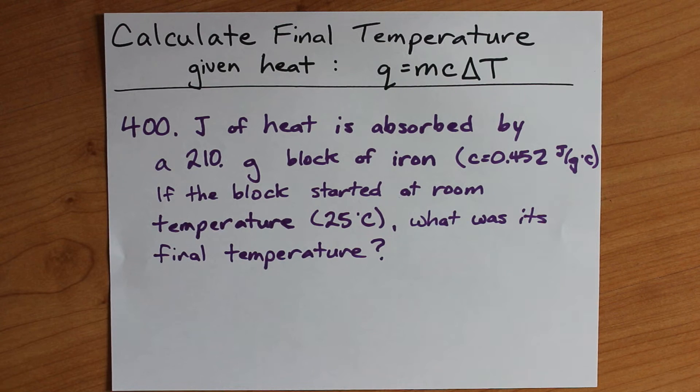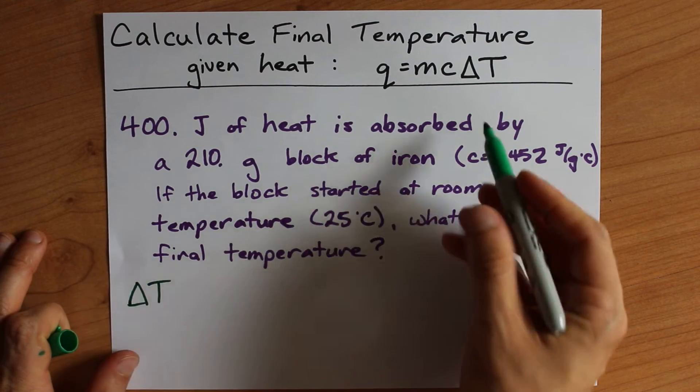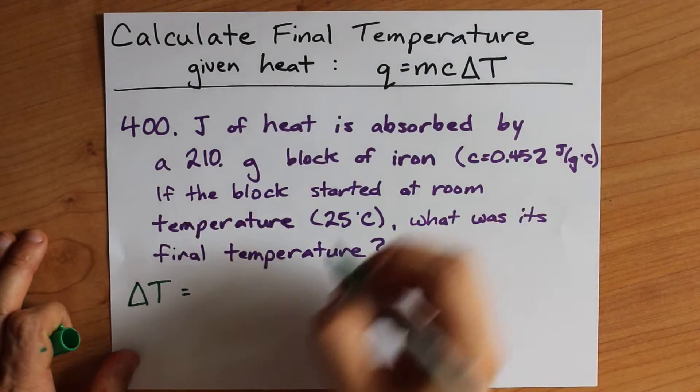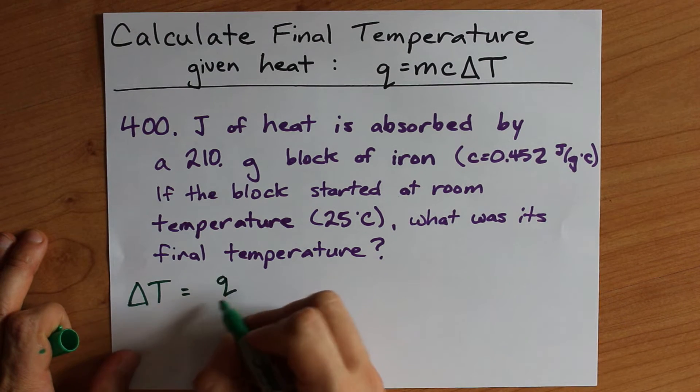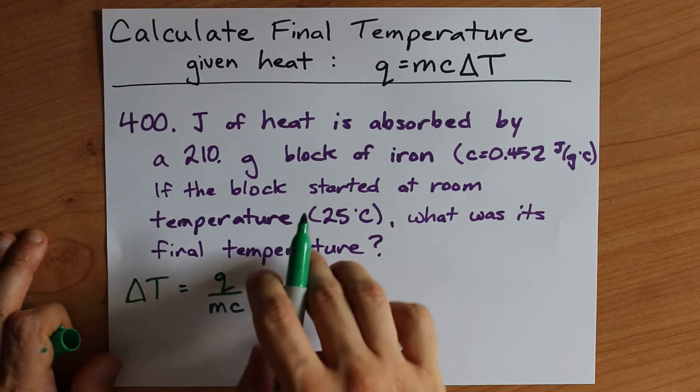To figure out delta t from q equals mc delta t, you just need to rearrange the formula for whatever delta t is, dividing both sides by mc. So we get delta t equals q over mc. This question asks,